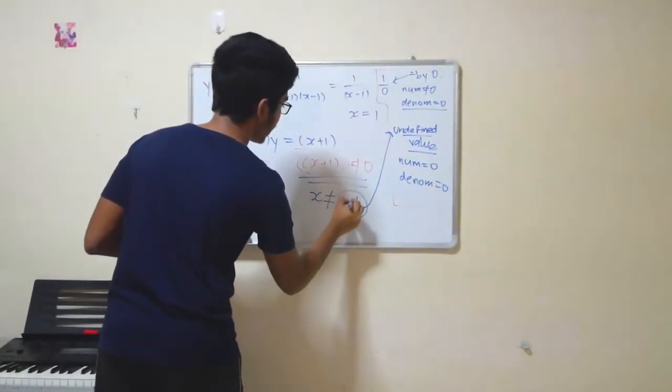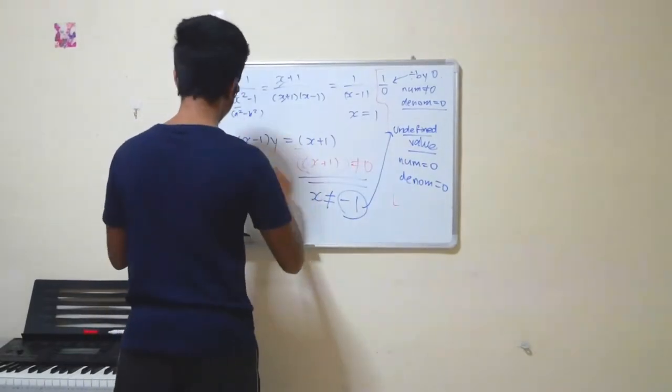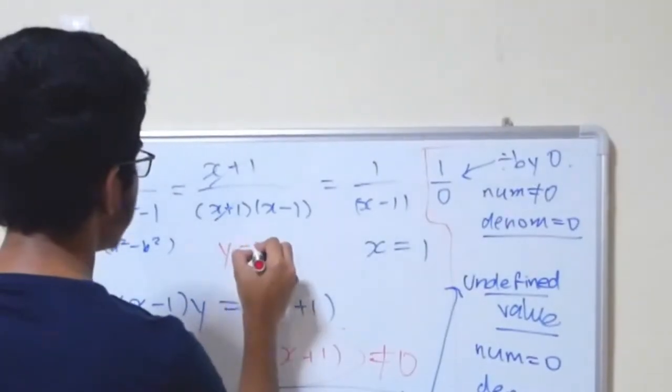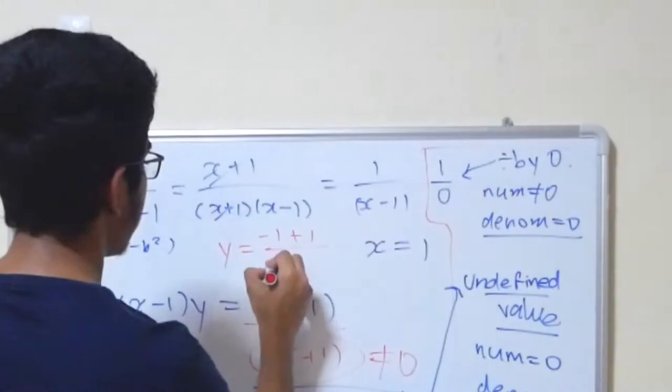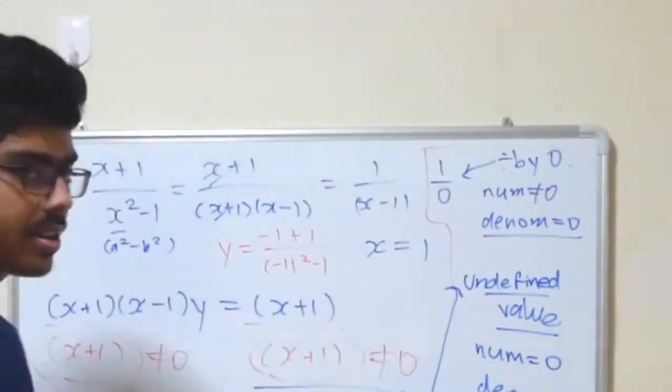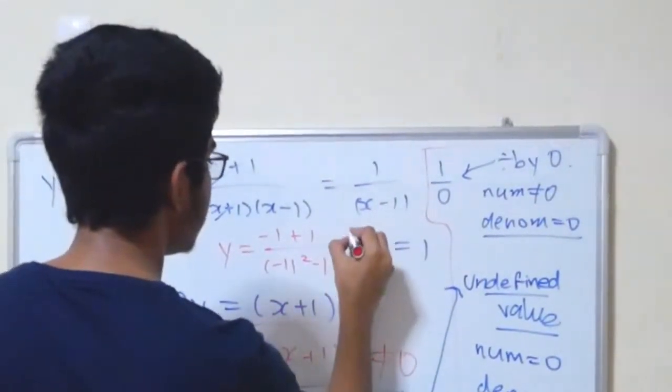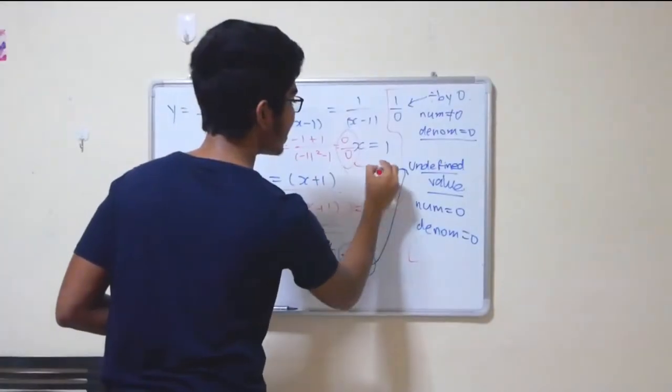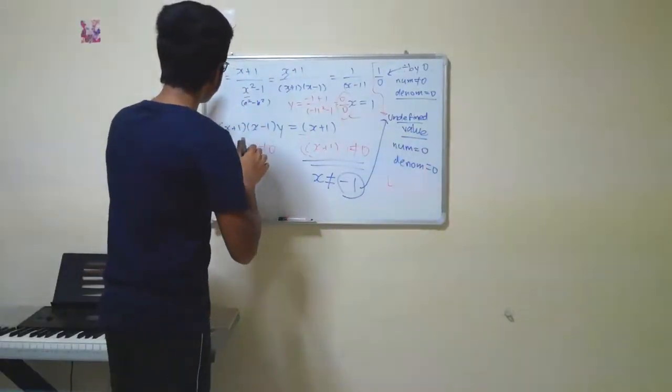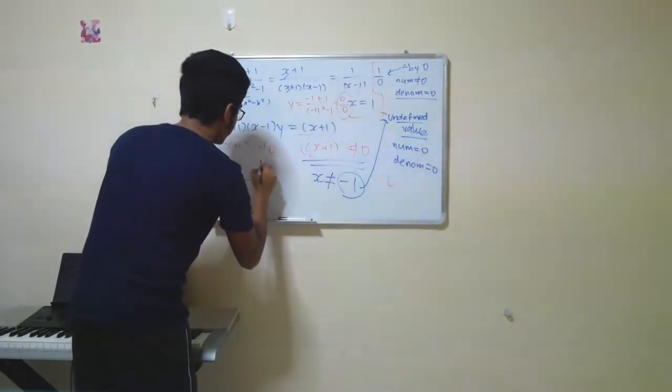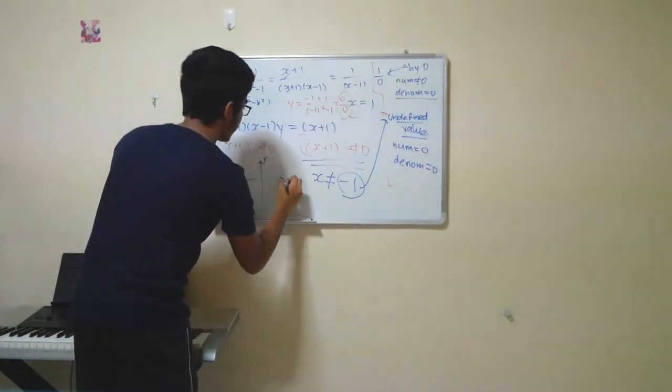And why is this case? Put minus 1 in the original equation. y is equal to minus 1 plus 1 divided by minus 1 square minus 1, which would give you 0 over 0, which is undefined. So, guys, when you look at the graph of y equals to x plus 1 over x square minus 1,